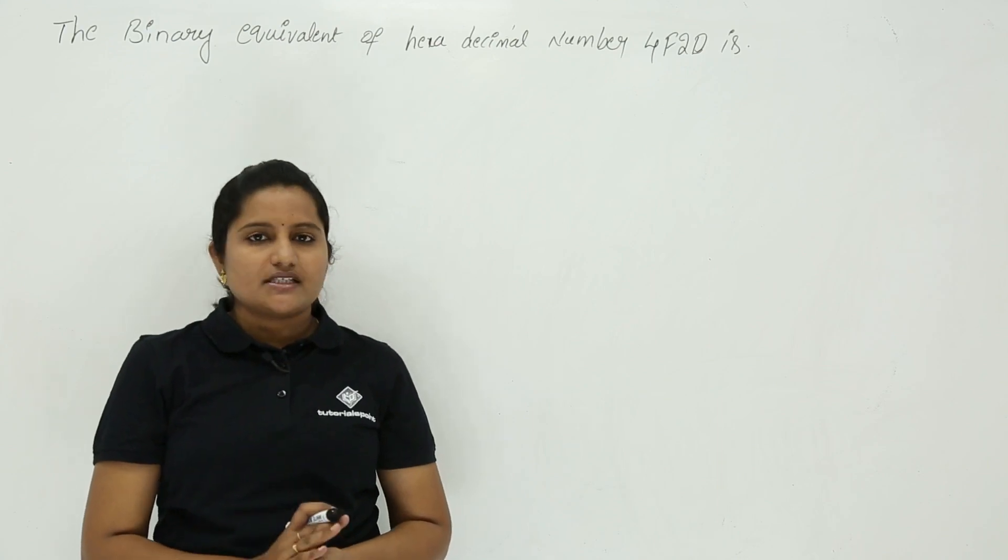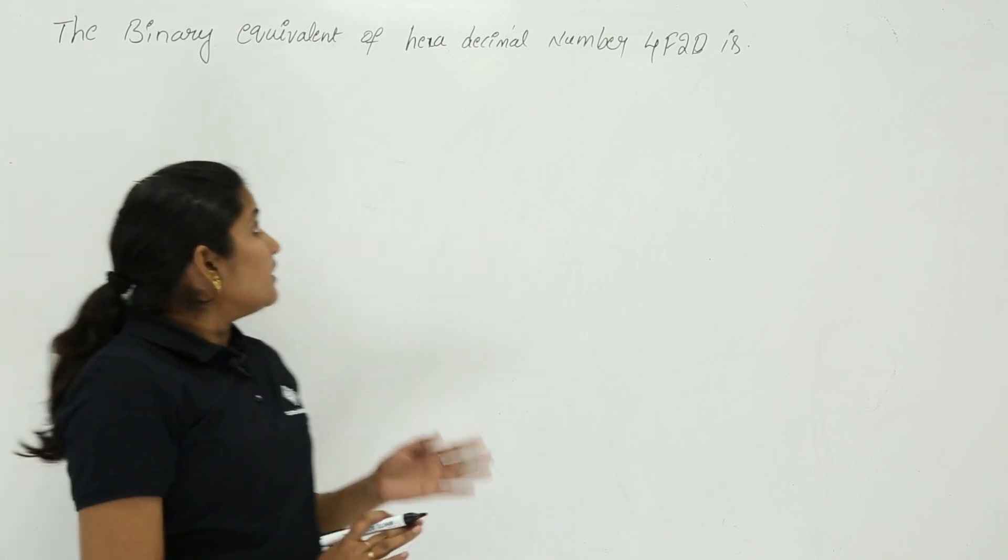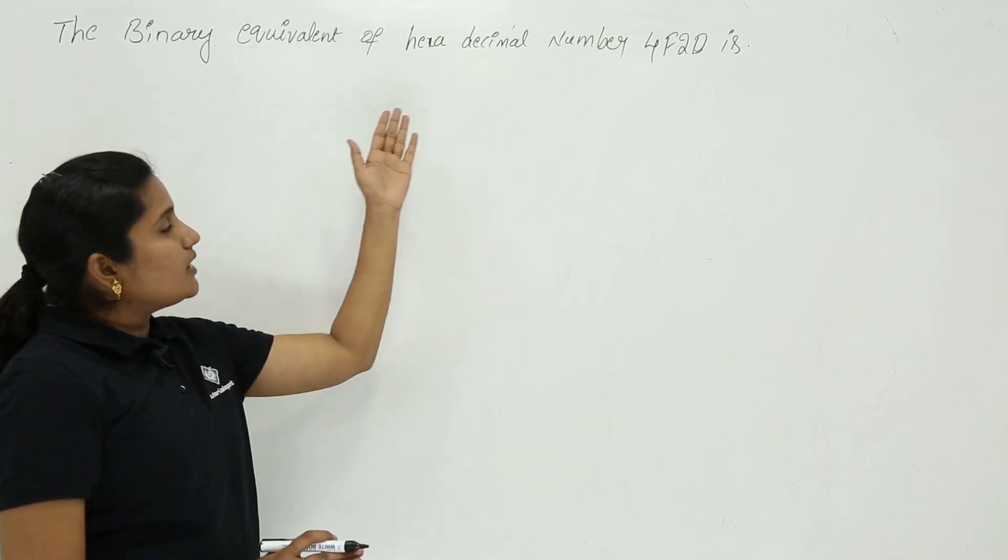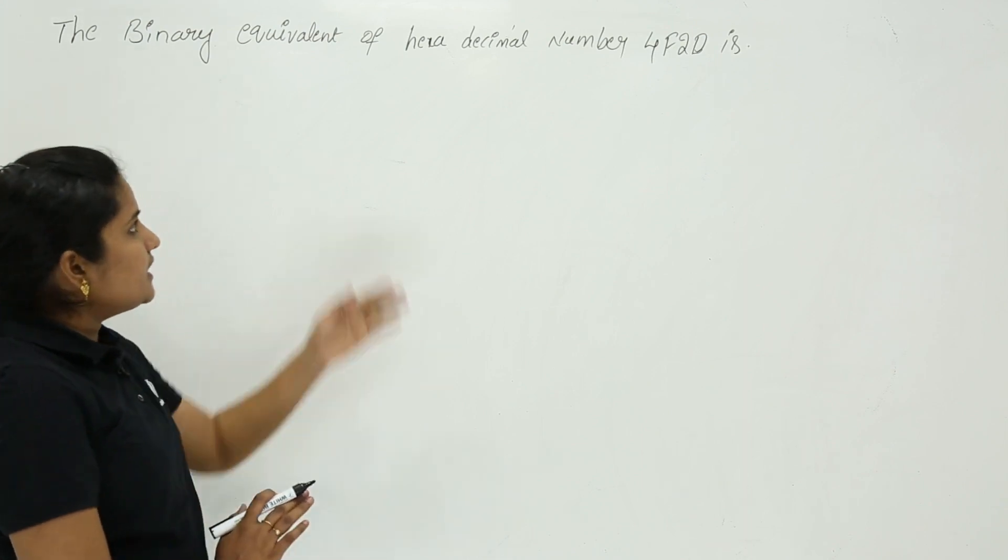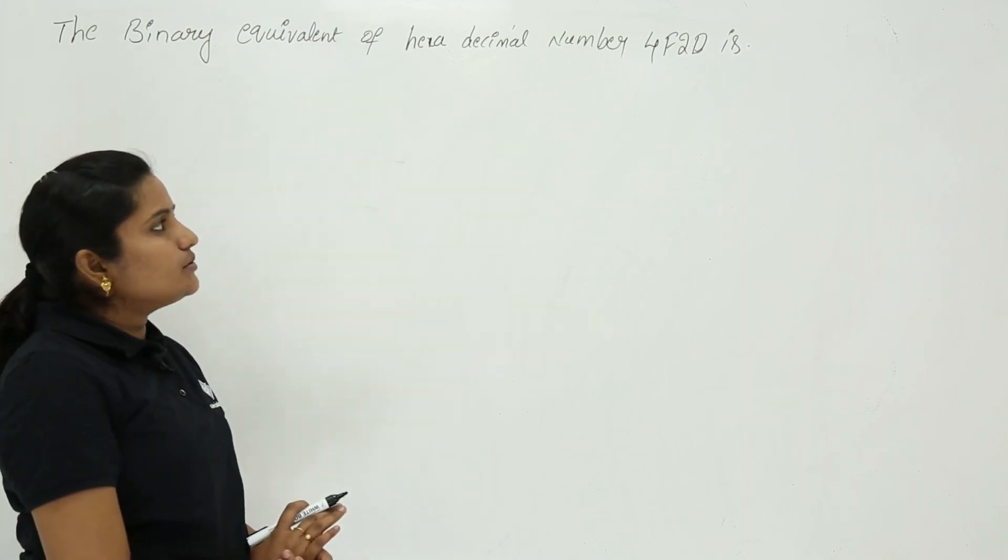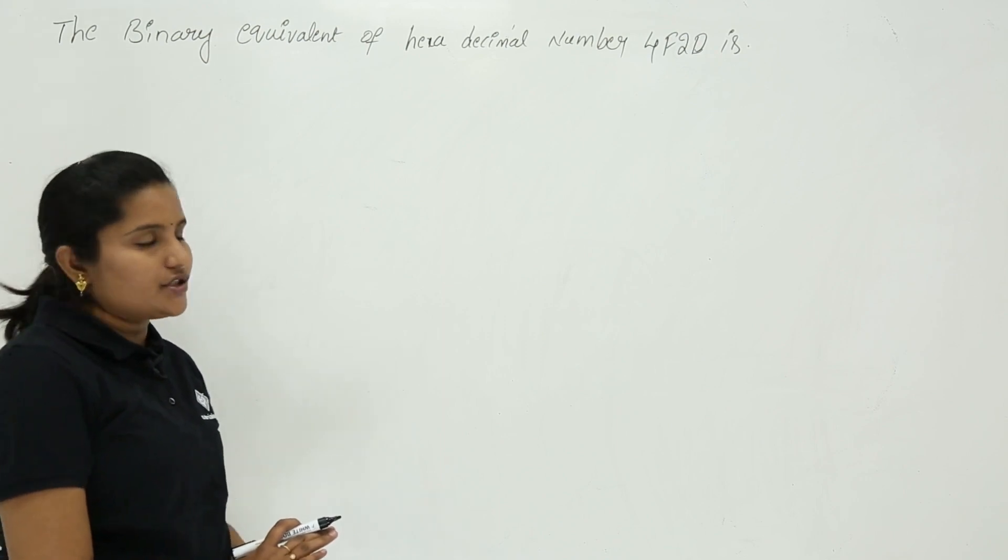In this class, we are going to discuss a problem related to number conversion. The problem is: the binary equivalent of hexadecimal number 4F2D is what? So the problem is related to hexadecimal to binary conversion.